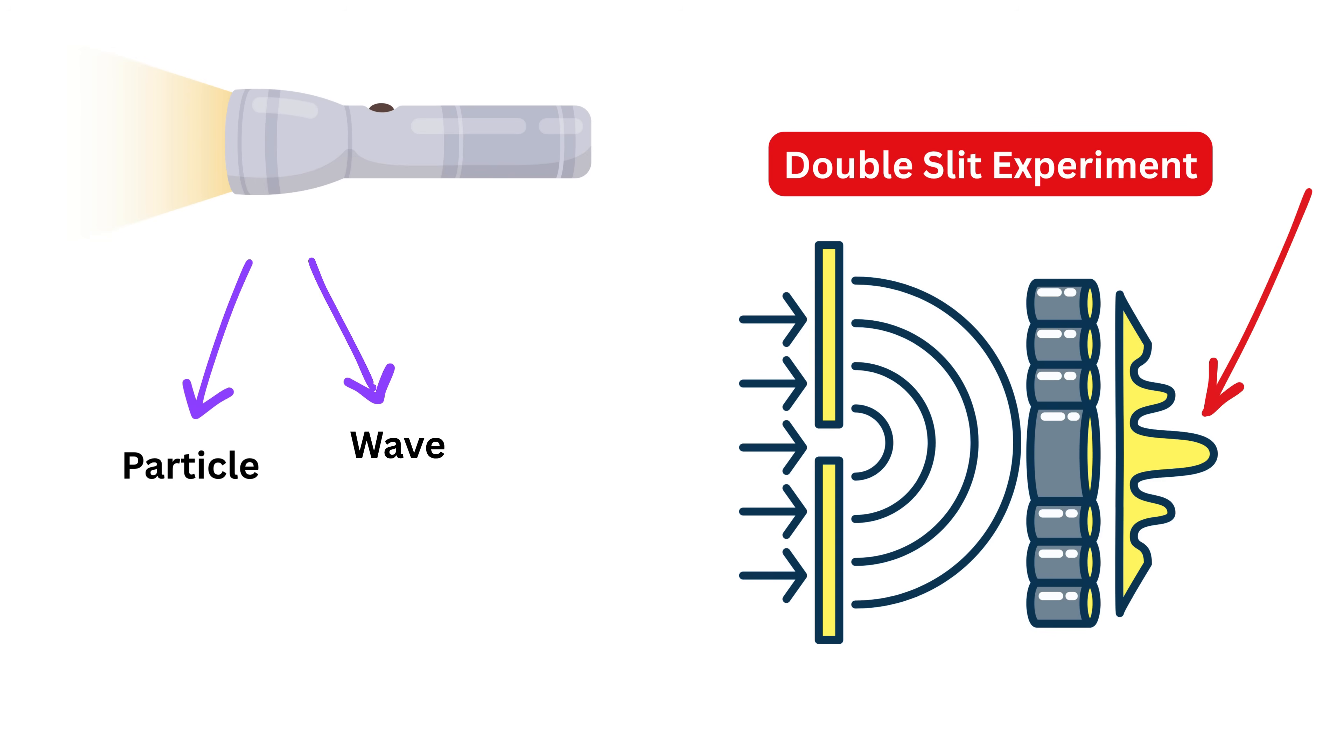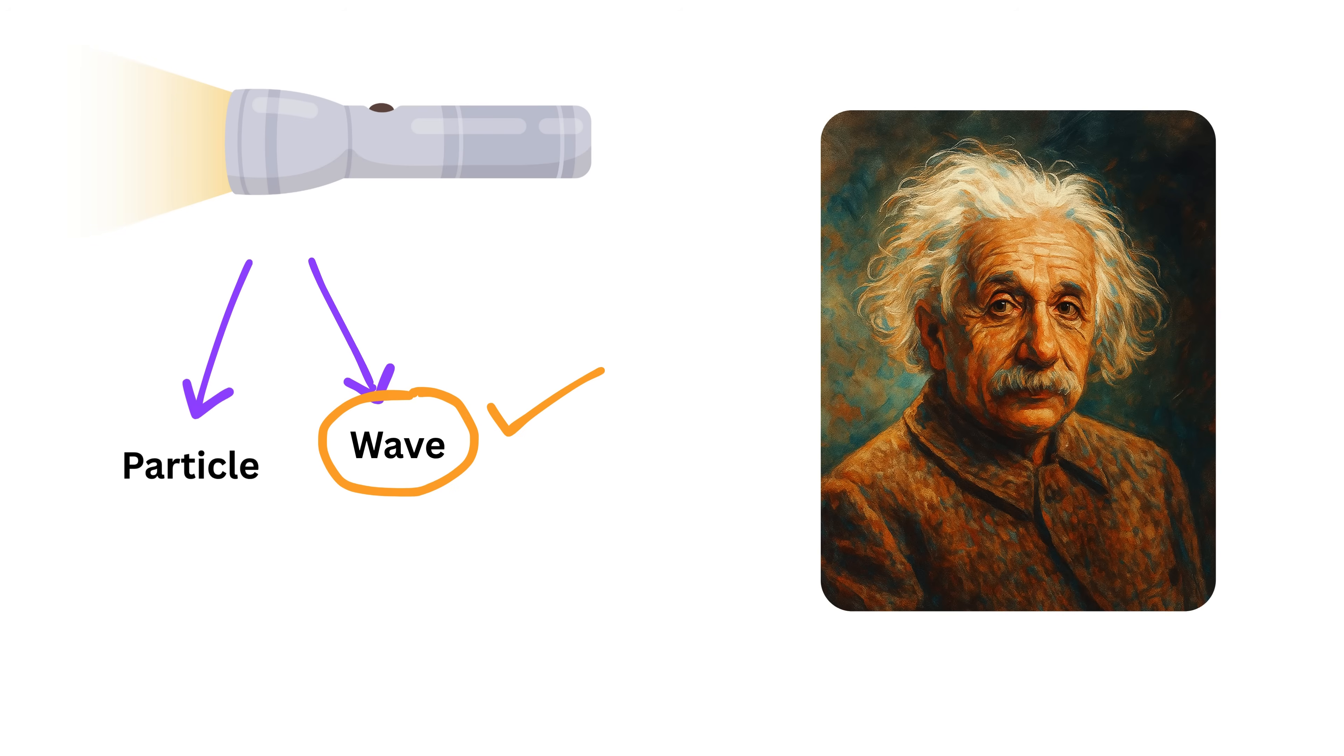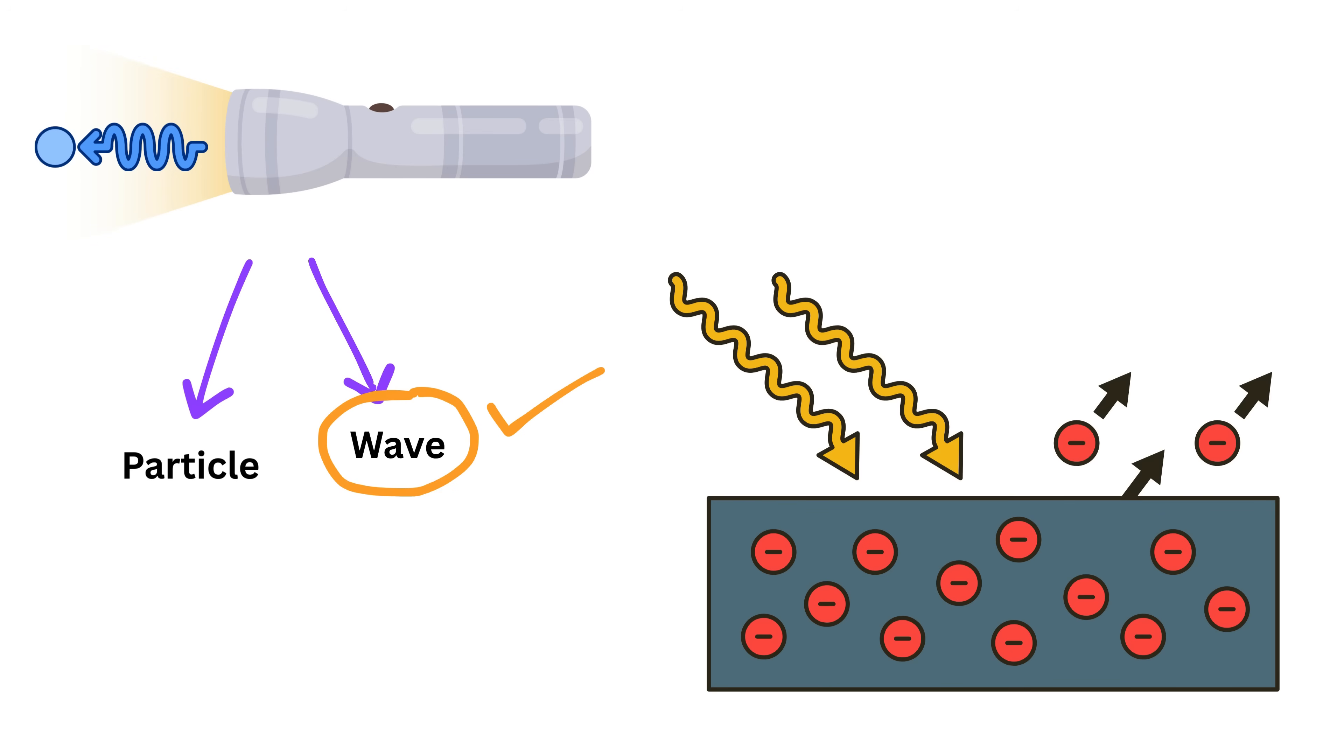This proved light behaves like a wave. But in 1905, Albert Einstein showed that light is made of tiny energy packets called photons. This breakthrough helped explain the photoelectric effect, a phenomenon where shining light on certain metals causes them to eject electrons. Classical wave theory couldn't fully explain why light below a certain frequency, no matter how intense, failed to knock electrons out.